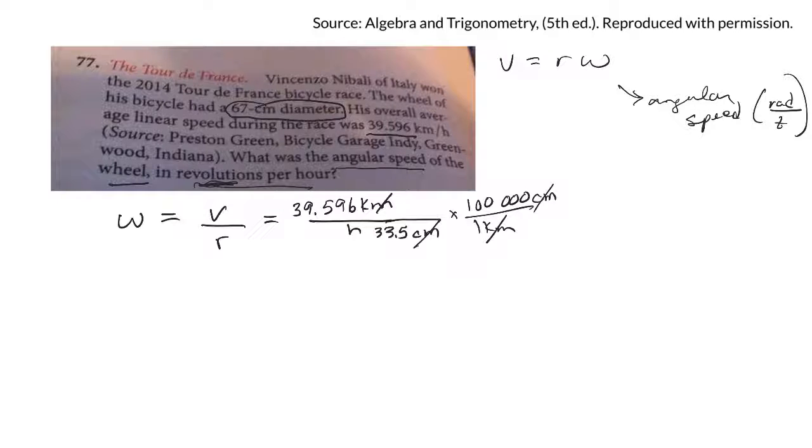So the units that I would have for this number, whatever it comes out to, is radians per hour. Notice that the radians just sort of show up as a unit. If all of these cancel, then the unit I'm left with is radians on the top because I'm looking for angular velocity, radians per hour.